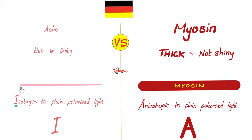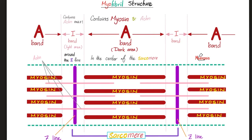Actin is thin, shiny, and isotropic — that's why actin is abbreviated as I from isotropic. Myosin is thick, non-shiny, and anisotropic, and the abbreviation is A. There is a part of the myofibril made only of actin fibers — we call that the I band. The region containing myosin is called the A band from anisotropic. Be careful: the A band contains myosin and some actin, not just myosin.